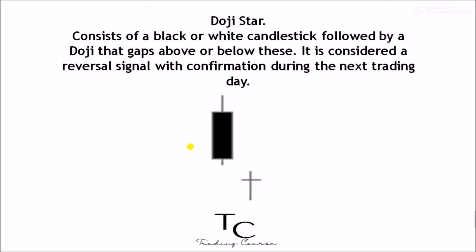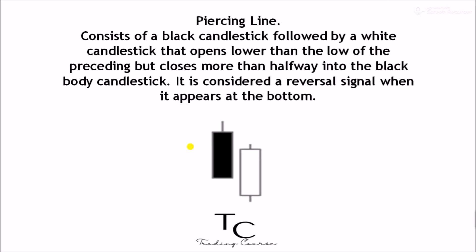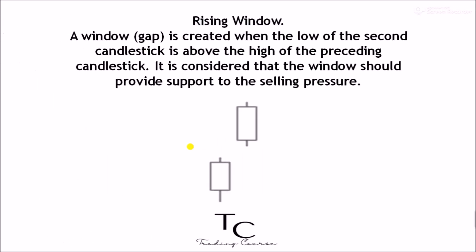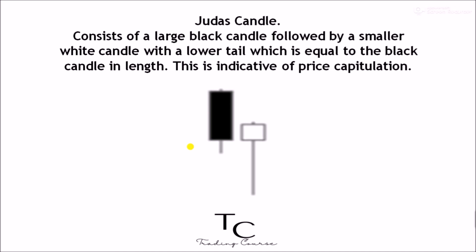Doji star is considered a reversal signal that opens lower than the low of the preceding but closes more than halfway into the black body candlestick; considered a reversal signal when it appears at the bottom. Rising window — a window gap is created when the low of the second candlestick is above the high of the preceding candlestick; it is considered that the window should provide support to the selling pressure. Judas Candle — consists of a large black candle followed by a smaller white candle with a lower tail which is equal to the black candle in length; this is indicative of price capitulation.